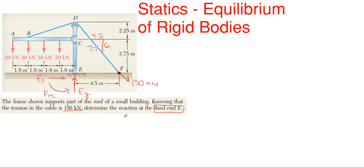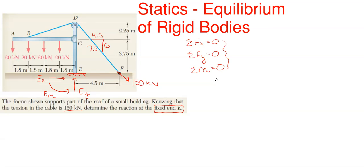We'll use those dimensions to resolve the 150 kilonewtons into x and y components. To solve for reactions, summation of forces in x equals zero, summation of forces in y equals zero, and moments about a point on the object equal zero. With a fixed condition, we'll use all three equations. Let's start with the x direction, assuming rightward as positive.